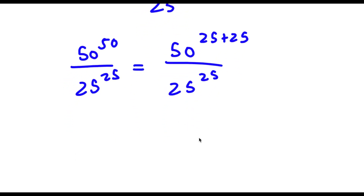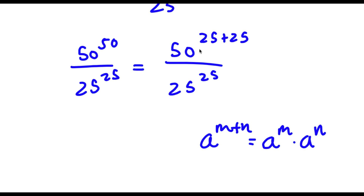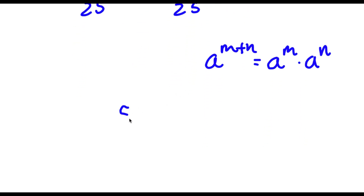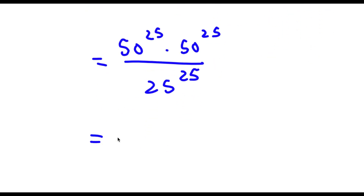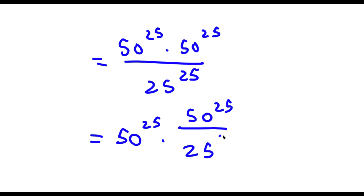Now if I have something in the form a to the power of m plus n, this equals a to the power of m times a to the power of n. So 50 to the power of 25 plus 25 is the same as 50 to the power of 25 times 50 to the power of 25, and I have this over 25 to the power of 25.